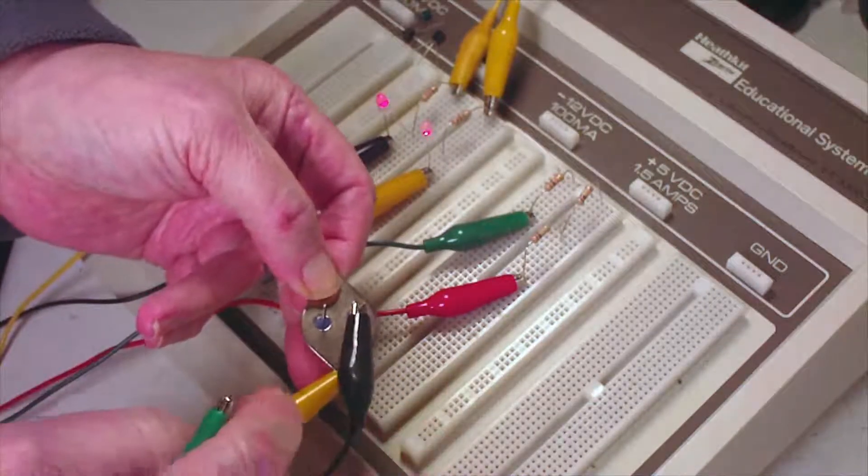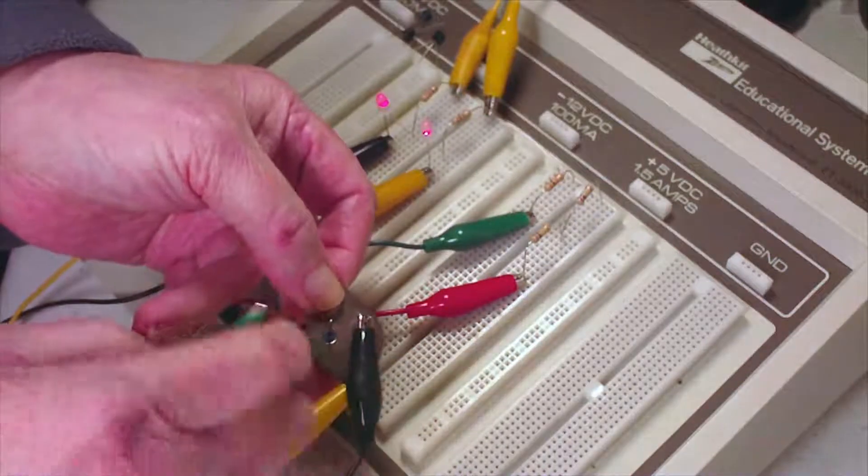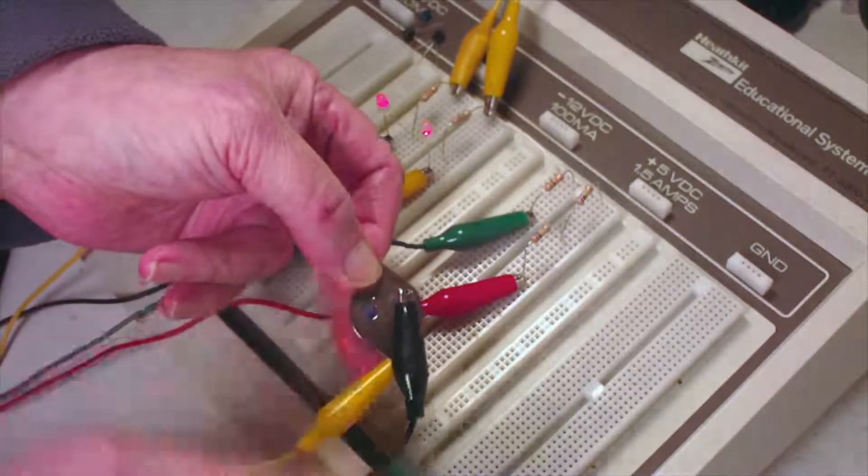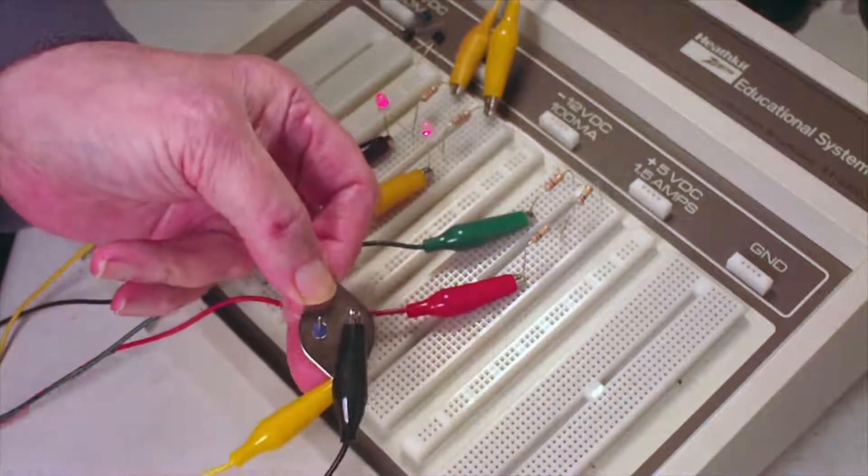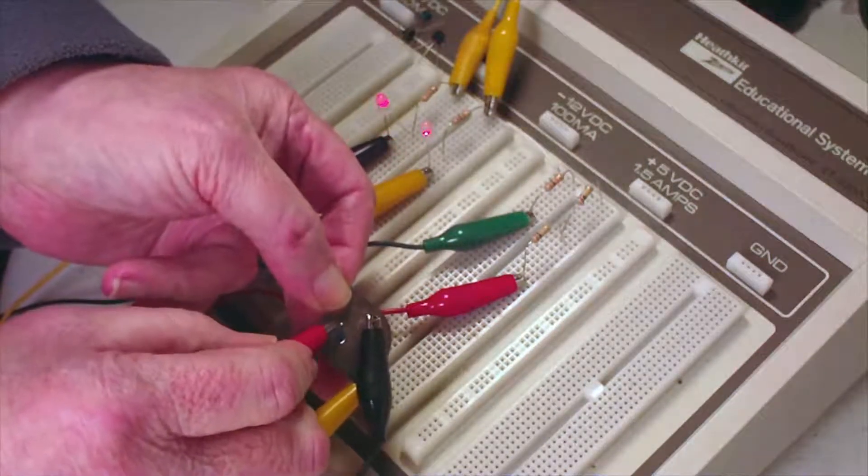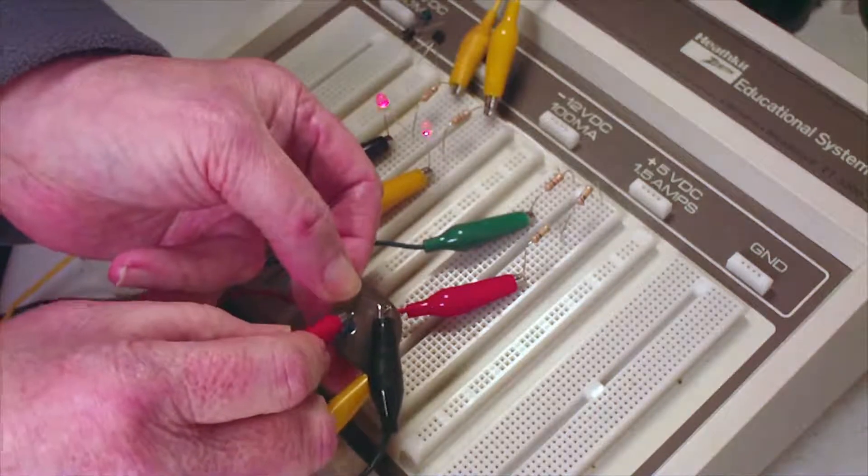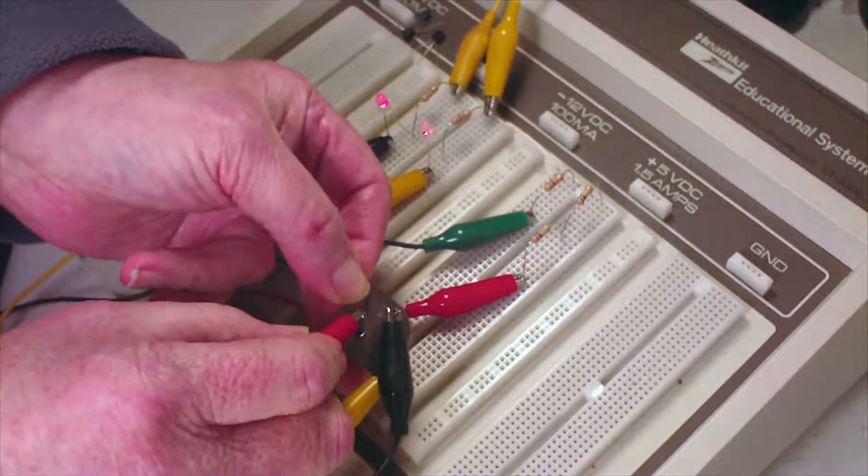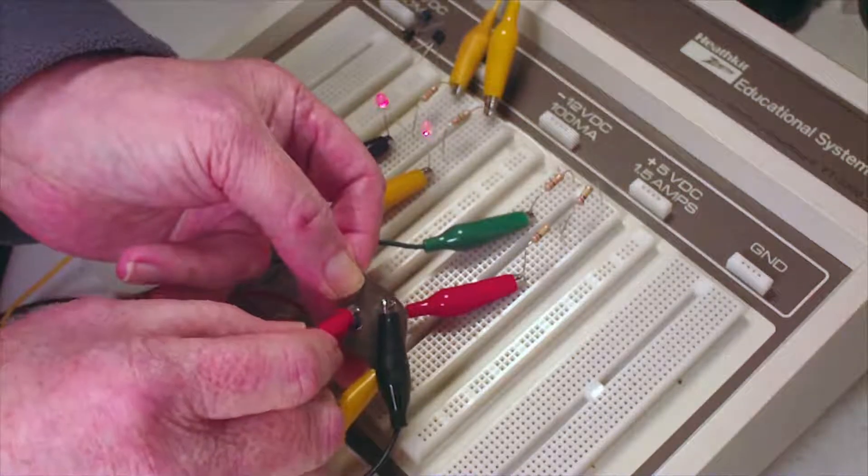So this is C, this is E, and this is B. Let's get the red lead here. Okay, hardly changes at all, so this is not a very high gain transistor.